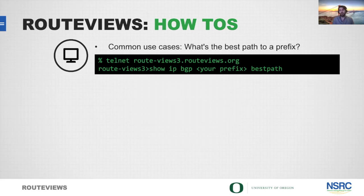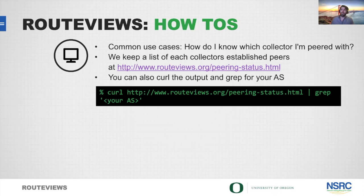You can get an understanding of where you're peered within the Route Views collector infrastructure. As we publish those peering stats, you can do something straightforward like curl that page and grep for your AS — you'll see the collector where you're peered, and that can easily be used to telnet to that collector. Something we've done recently within the Route Views collector infrastructure is enable RPKI.